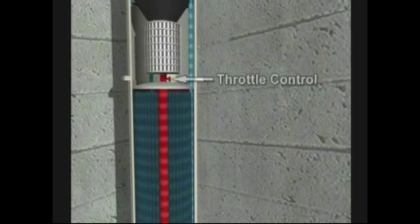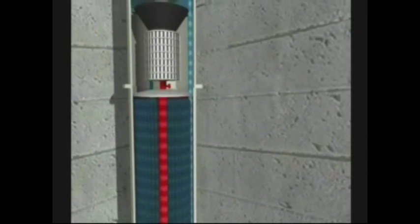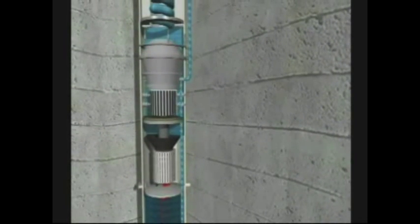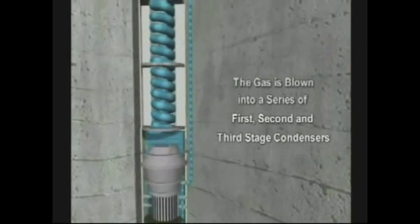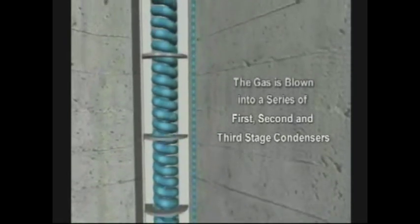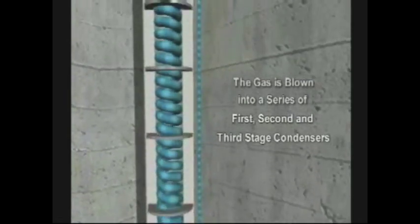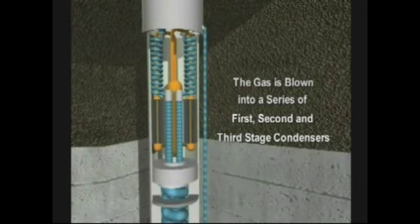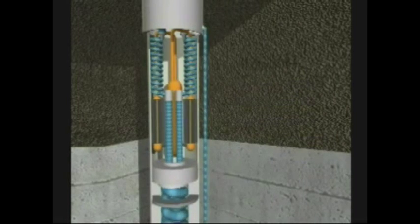As the throttle control or valve opens to release the compressed liquids into the turbine chamber, they become a gas which propels the turbine which is directly coupled to the generator in the monocoque turbo generator system. This creates the power. As the gas leaves this monocoque turbo generator system, it goes through the condenser system, the first, second, and third stages.